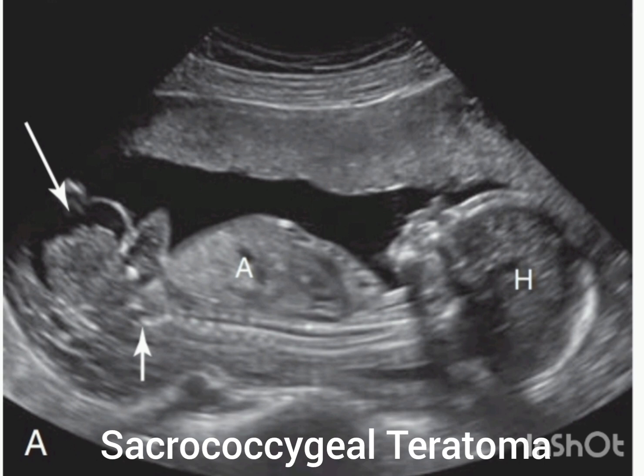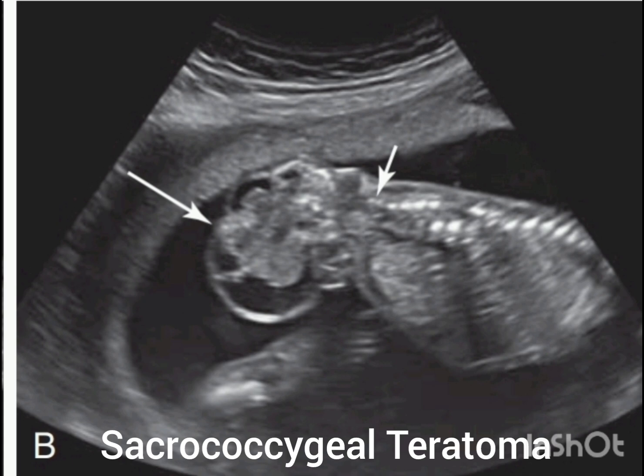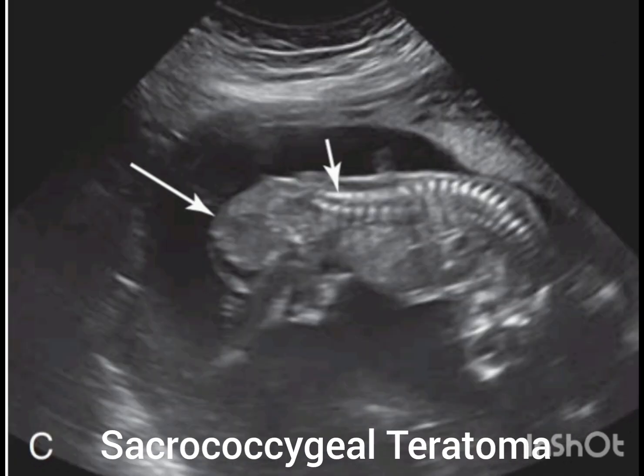Here is another image of sacrococcygeal teratoma, indicated by the large arrow, extending caudally from the level of the distal spine. In a further image, you can see the normally tapering sacral spine with no evidence of spinal abnormality, with the sacrococcygeal teratoma again indicated by the long arrow.